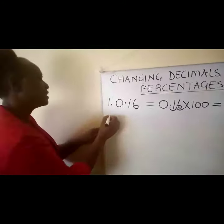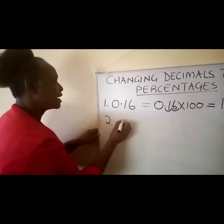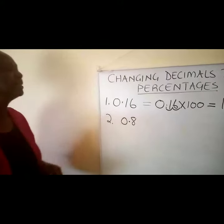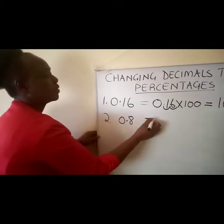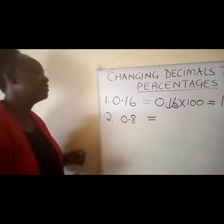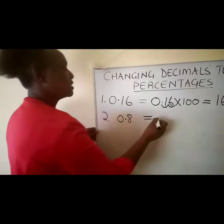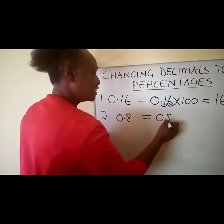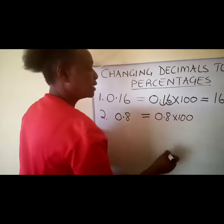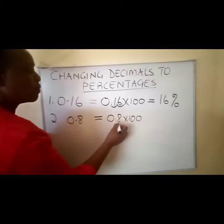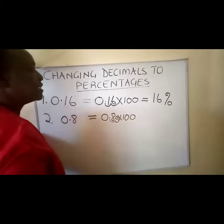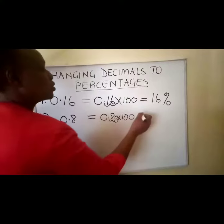Sometimes you get a decimal like 0.8. Someone might write a zero to make it 0.80, which is still fine. But even with 0.8, we multiply by 100 — you move the comma one place, then move another space and add a zero — so this becomes 80 percent.